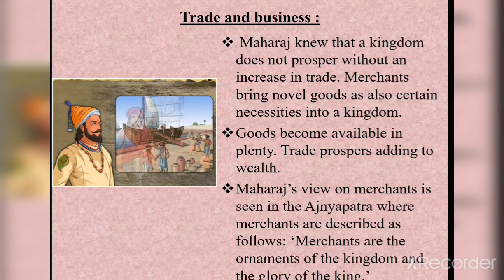Trade and Business: Maharaj knew that the kingdom does not prosper without an increase in trade. Merchants bring novel goods and necessities into a kingdom; goods become available in plenty and trade prospers, adding to wealth. It was Maharaj's policy to protect industries. An excellent example was the salt industry. Traders had been importing salt from Portuguese territory and selling it in the Swaraj, affecting local trade in Konkan. So Maharaj charged a heavy tax on imported salt. His view of merchants is seen in the Ajnapatra, where merchants are described as 'ornaments of the kingdom and the glory of the king.'